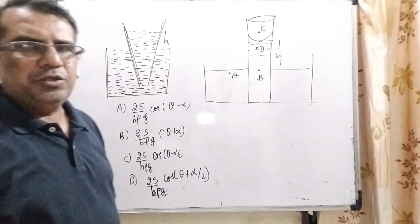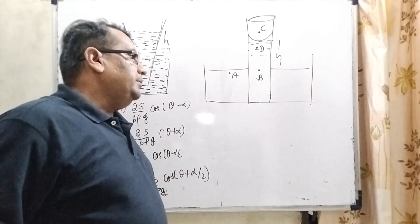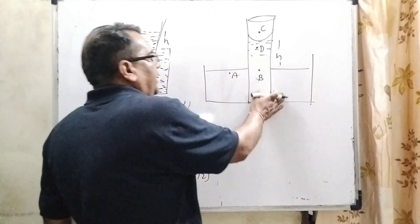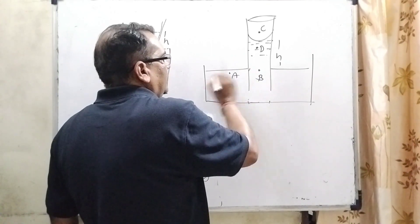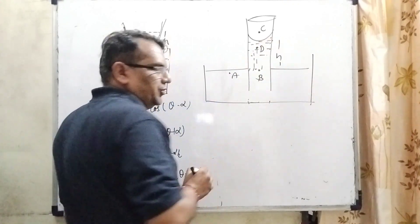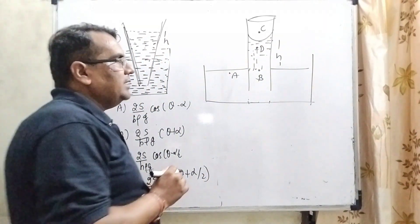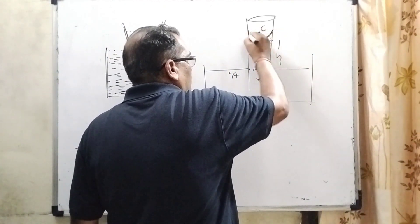To solve this question, we are using the concept of rising water in capillary. Here, any capillary dipped in liquid or water, then liquid is rising up to the height of h. Why it is rising? Because it forms the meniscus, concave meniscus.